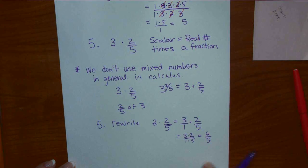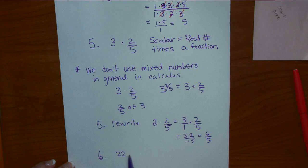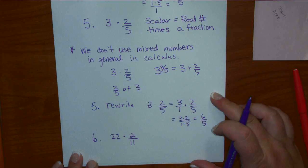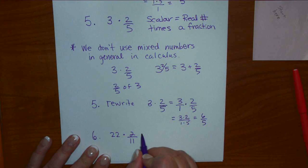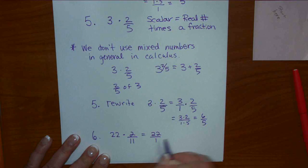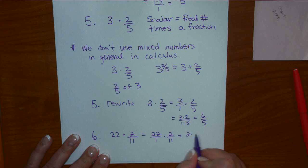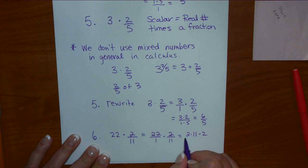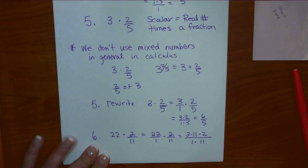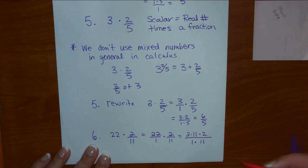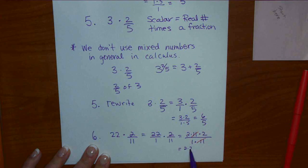Another example: 22 times 2 over 11. This is 22 over 1 times 2 over 11. Then 22 can be written as 2 times 11. The 11s cancel, and we have 2 times 2 over 1, which is 4 over 1, or just 4.